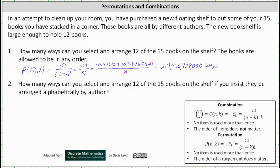Which indicates the number of ways you can select and arrange 12 of the 15 books on the shelf if they must be in alphabetical order is 15 choose 12. And 15 choose 12 is equal to 15 factorial divided by the product of (15 minus 12) factorial and 12 factorial.